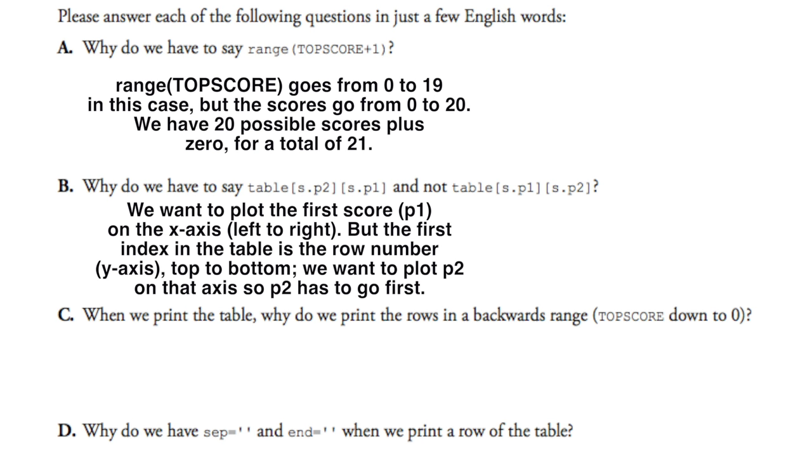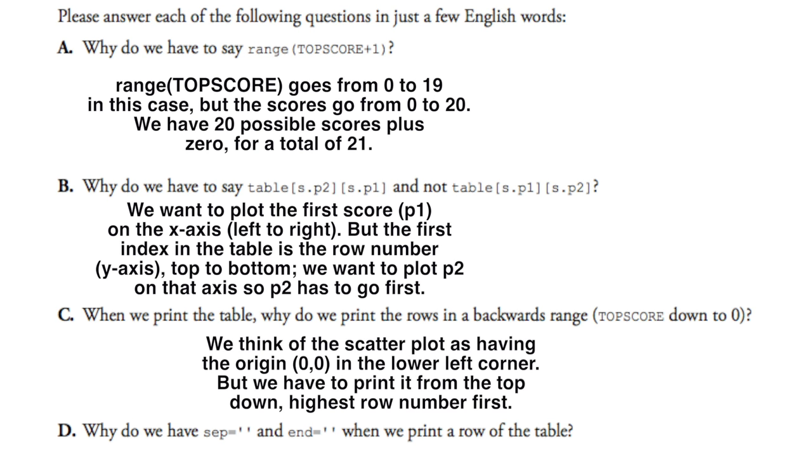So part C: When we print the table, why do we print the rows in a backwards range, TOP_SCORE down to zero? So we have to think of this scatter plot having the origin (0,0) in the left lower corner. But we have to print it from the top down, highest row number first. It's just the way that we set it up initially that this has to happen.